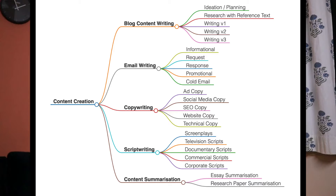For example, blog writing: first you create an outline, then you research, refine your outline, create version one, edit it, version two, final draft, and so on. Copywriting could include SEO copywriting, website copywriting, and advertisement copywriting. All five use cases are extended into different categories, and there are 22 categories in total.